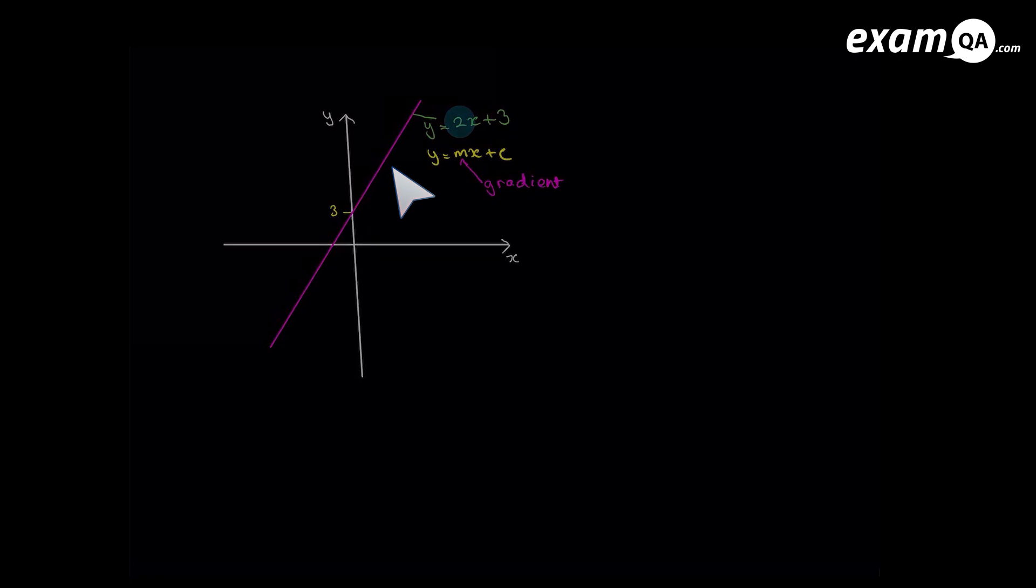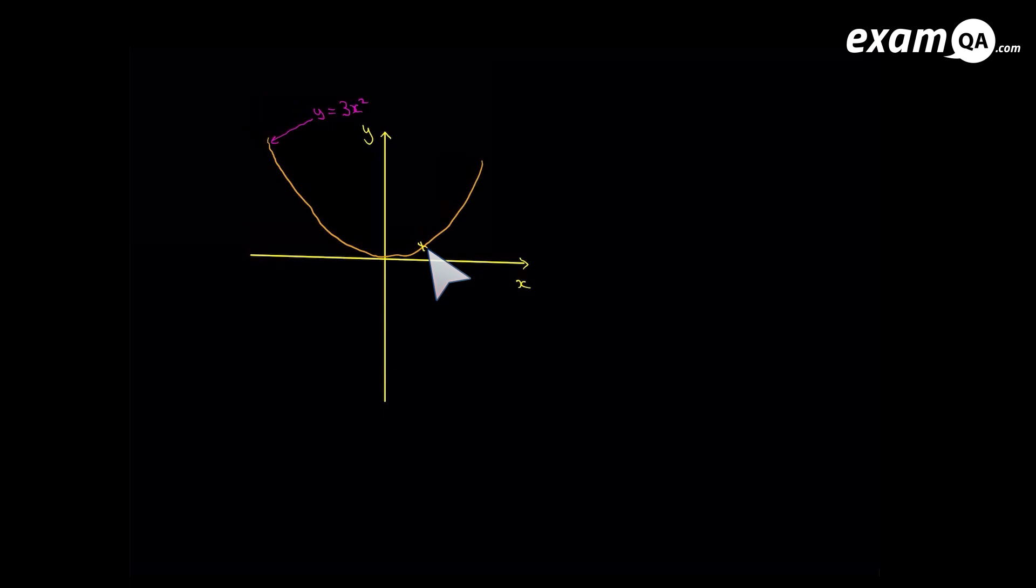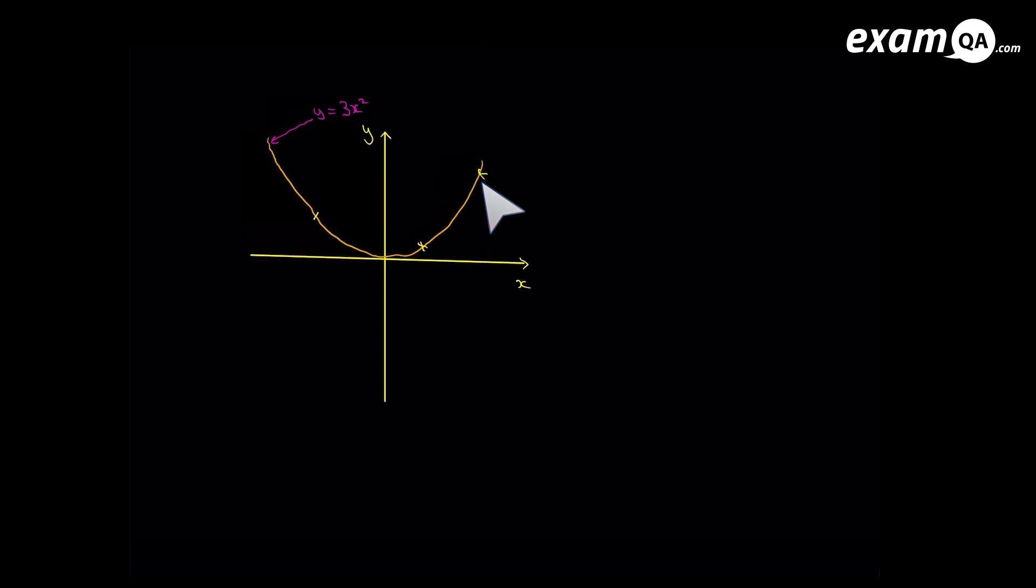But when we're looking at curves, that's not the case. Here I've got the graph of y equals 3x squared. And with graphs, we don't have a set gradient as before. Every position has a different gradient. Remember, gradient is talking about steepness, the slope of it. And you can see here the steepness is changing depending on where you are. For example, here, we are less sloped compared to here. On this side, we are negatively sloped. So the gradient here would be negative. So you can clearly see that every position has a different gradient.